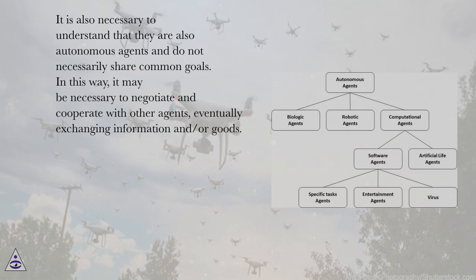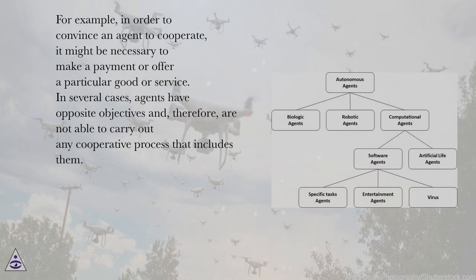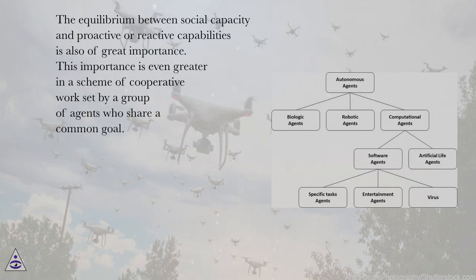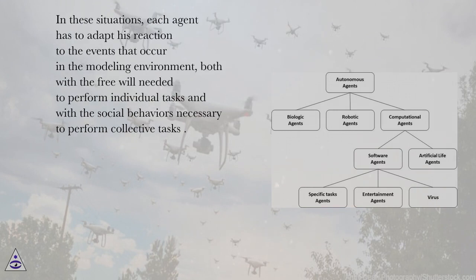In this way, it may be necessary to negotiate and cooperate with other agents, eventually exchanging information and or goods. For example, in order to convince an agent to cooperate, it might be necessary to make a payment or offer a particular good or service. In several cases, agents have opposite objectives and therefore are not able to carry out any cooperative process. The equilibrium between social capacity and proactive or reactive capabilities is also of great importance, especially in a scheme of cooperative work set by a group of agents who share a common goal. Each agent has to adapt its reaction to events in the modeling environment, balancing free will for individual tasks with social behaviors necessary for collective tasks.